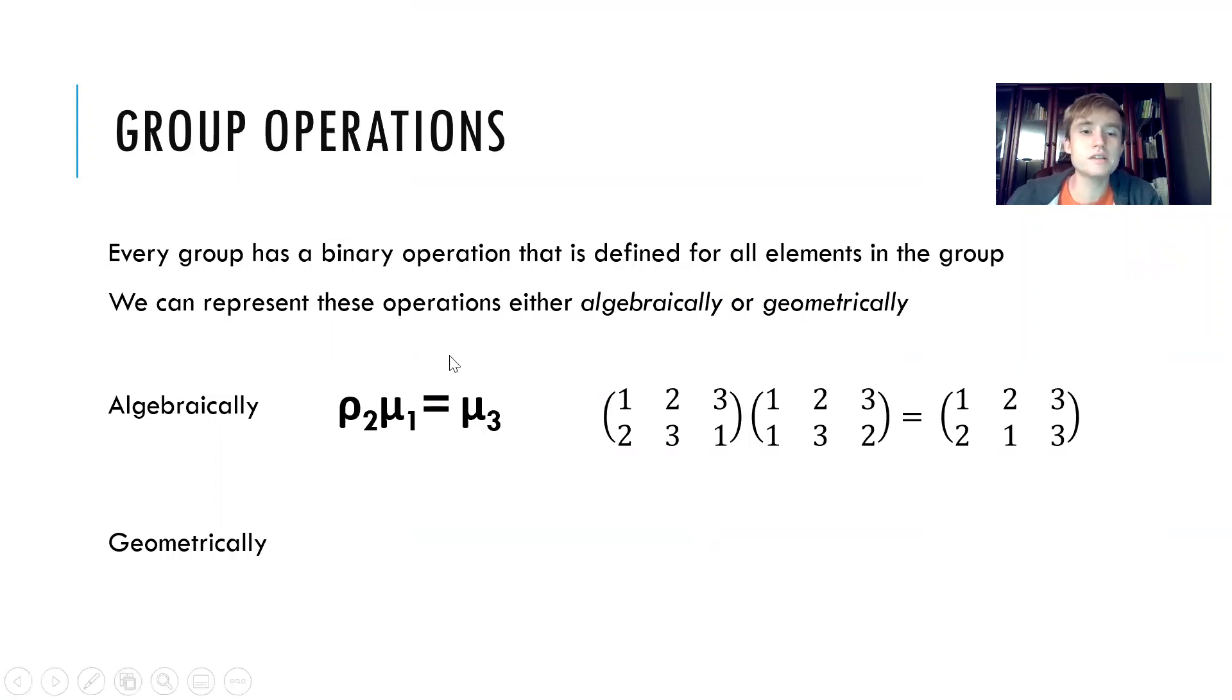What I mean by algebraically is that we use symbols to demonstrate we're performing an operation, like when we're doing an operation over triangle symmetries, we'll use rho two or mu one. If we want to say we're operating rho two and mu one, we just put it like this or we sometimes use the numbers over here.